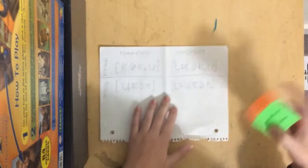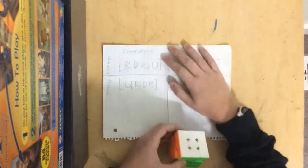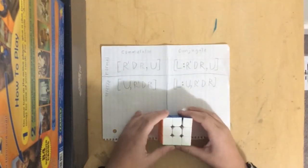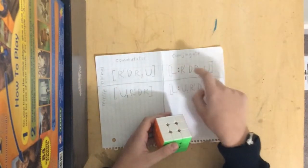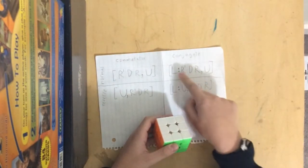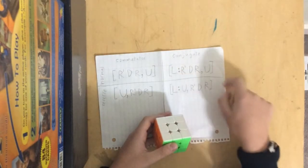Now let's talk about conjugates. So conjugates are similar. With conjugates, there's a set of moves, which in here is just the L, and then there's a colon, and on the other side of the colon, there's another set of moves.